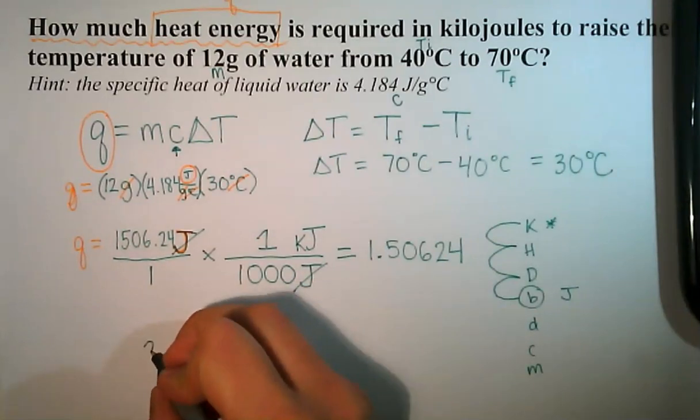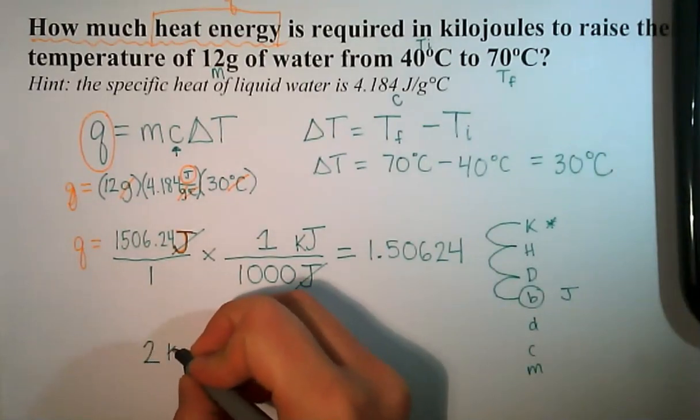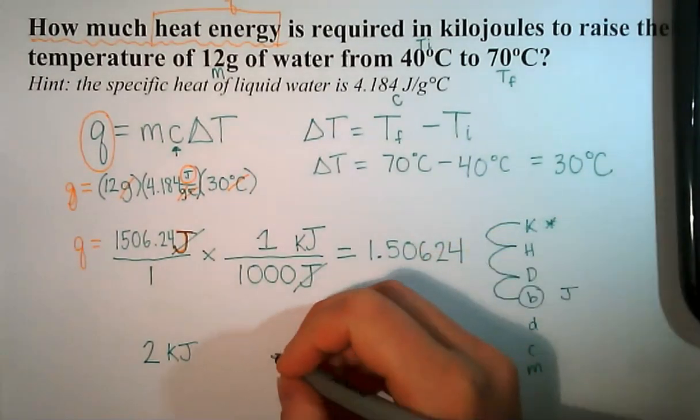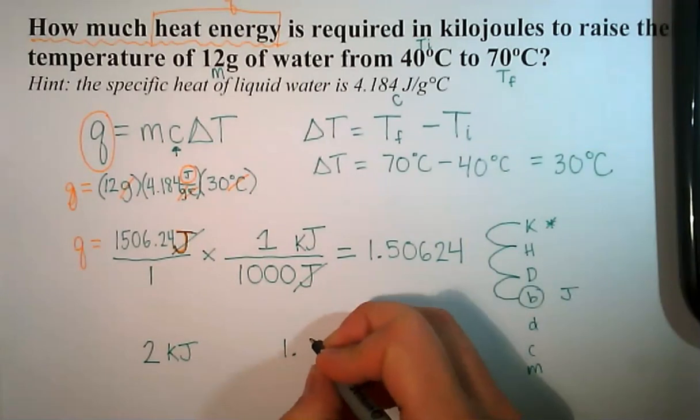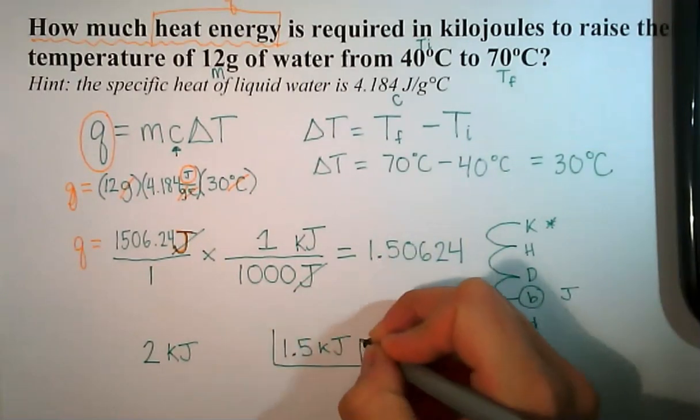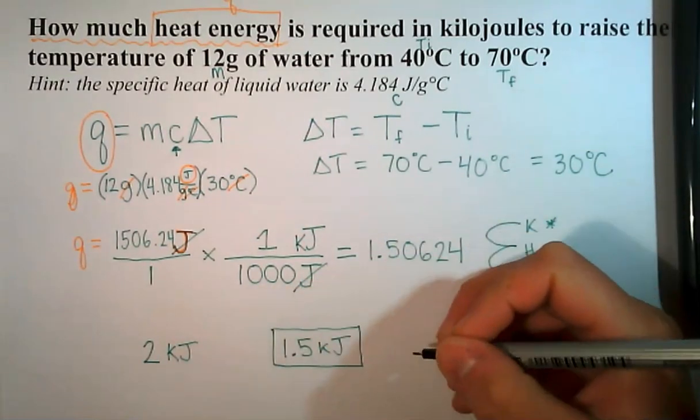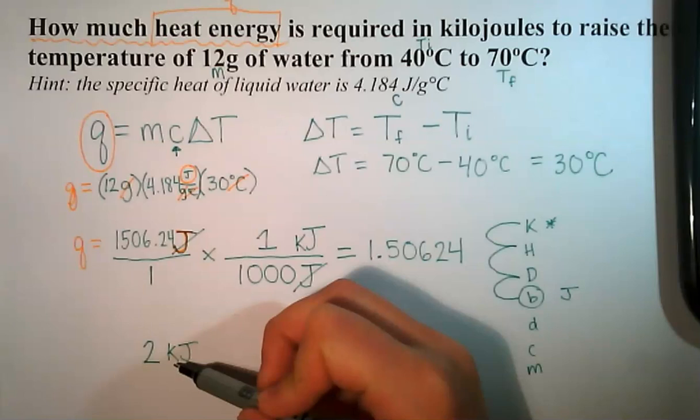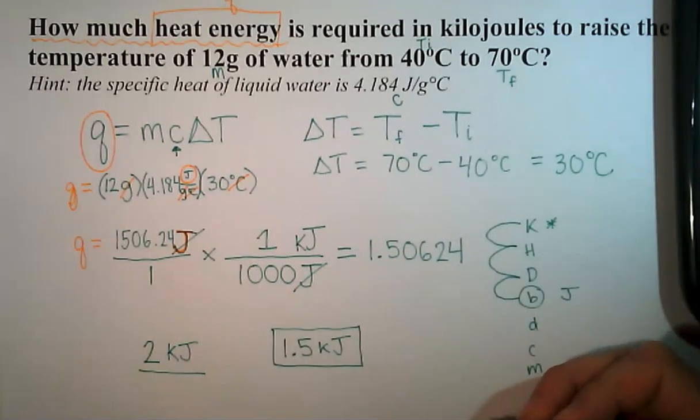But I'm actually going to keep one decimal place here. So 1.5 kilojoules might be my final answer. It seems more reasonable to me, but if you were following correct significant figure rules it would be rounded to two kilojoules here, just one significant figure.